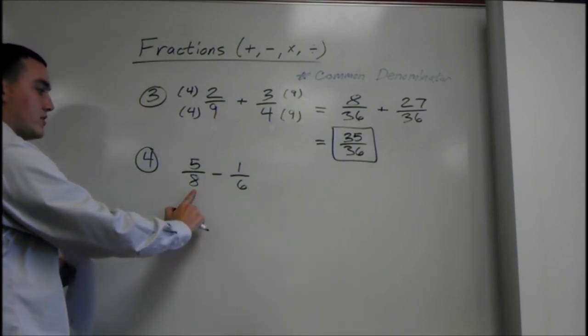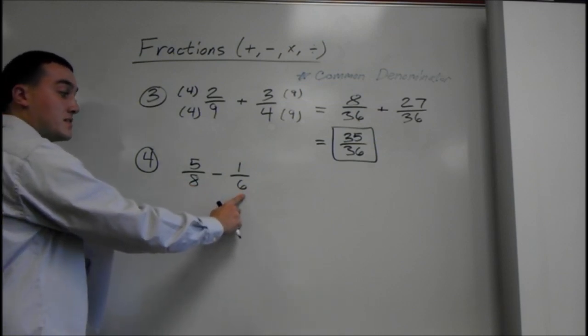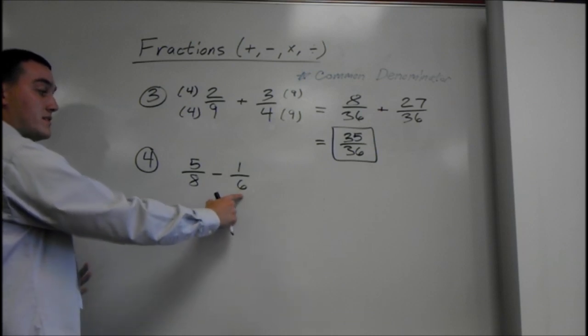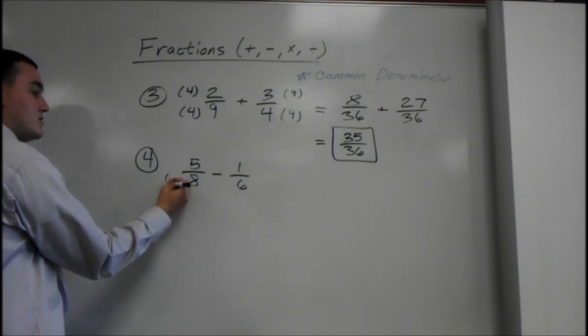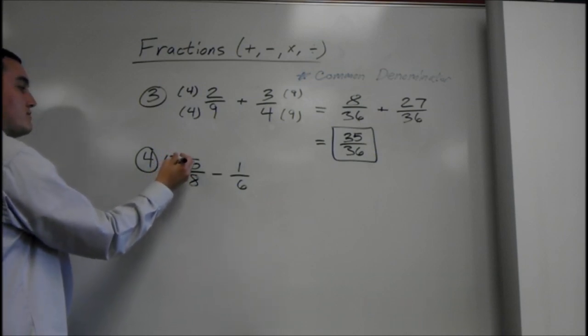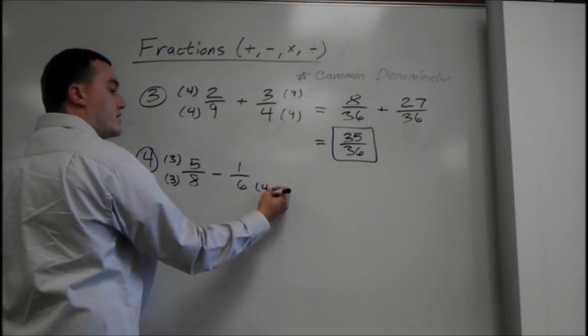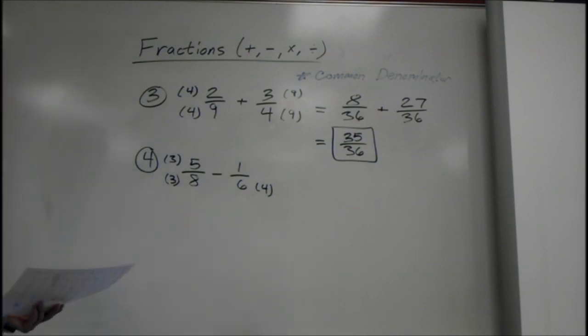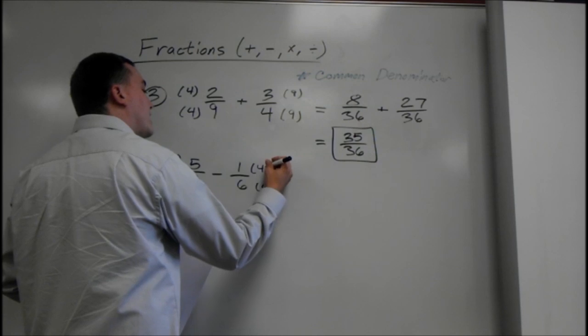So, take the higher number and go up. 8 goes into 16. But 6 does not go into 16. So, we keep going. 8 goes into 24. And 6 goes into 24. So, 8 goes into 24, 3 times. And if you do it on the bottom, you've got to multiply on the top. 6 goes into 24, 4 times. And you always want to think of the lowest number here. Yes, we know 8 times 6 is 48. They will both go into 48. But you want to get the lowest one to avoid reducing in the end.